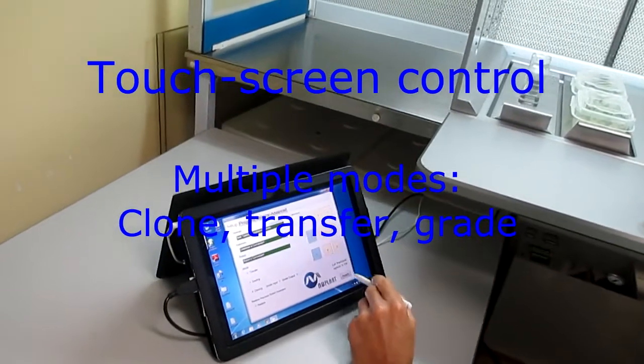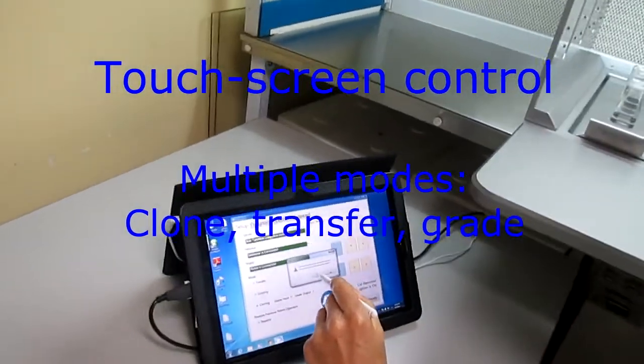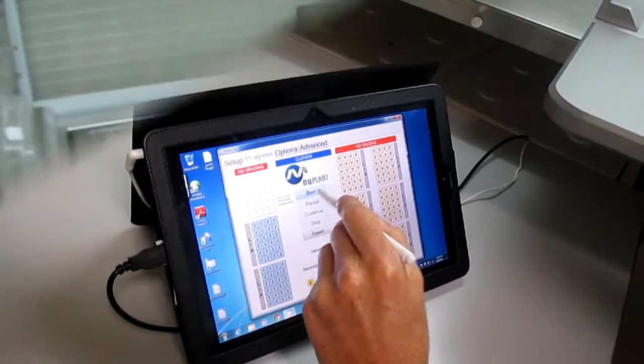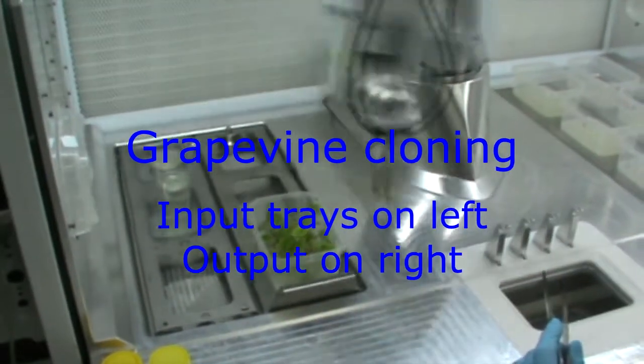Touch screen commands allow simple control of the various modes available. Cloning is illustrated with grapevines.